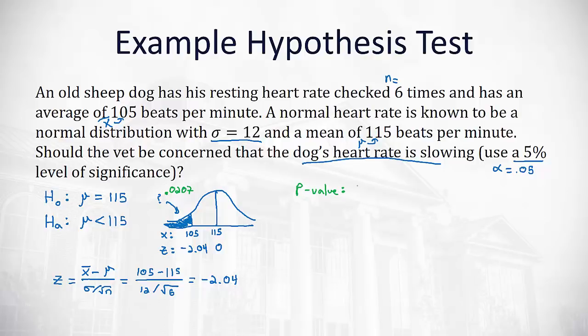That is, based on our sample of these six heart rates, there is a 0.0207 probability that our null hypothesis is true, that the average is 115. Alpha is that smallest probability where we still believe the null hypothesis is true, and that's 0.05. We see that p-value is smaller than alpha. It is past our threshold. A small p-value means we are going to reject the null hypothesis in favor of the alternative hypothesis that for this dog, his average resting heart rate is in fact less than 115 beats per minute. So to answer the question, should the vet be concerned that the heart rate is slowing? The answer is yes. The doctor should be concerned at the 5% level of significance that the dog's heart rate is slowing.